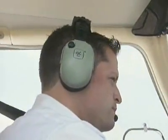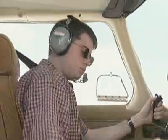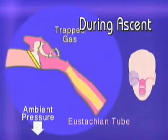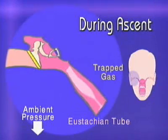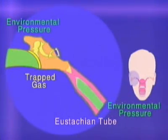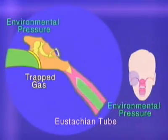This equalization process is normally accomplished simply by swallowing or using an exaggerated jaw movement. However, if the person has an upper respiratory infection like a cold with nasal congestion, the eustachian tube may be blocked due to local swelling. Although the middle ear may allow the escape of expanding gas on ascent, it is unlikely that it will allow the re-entering of air during descent. Consequently, an air pressure differential develops between the middle ear and the environment that will cause the eardrum to retract.